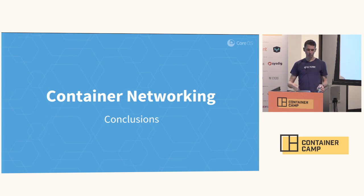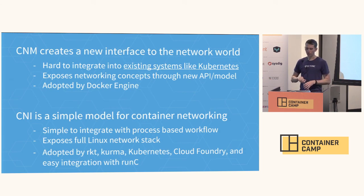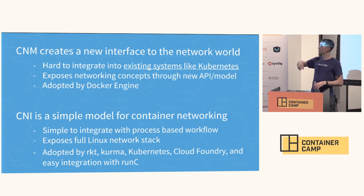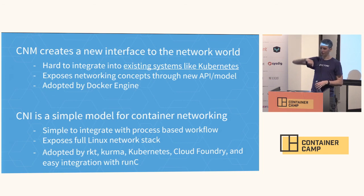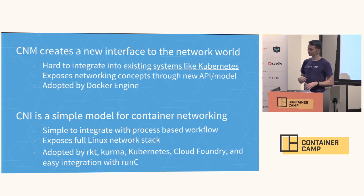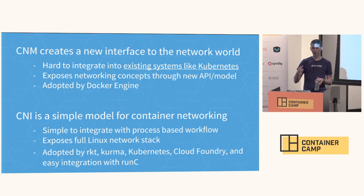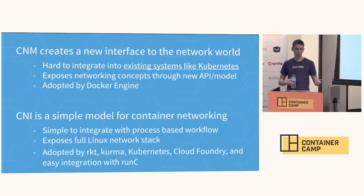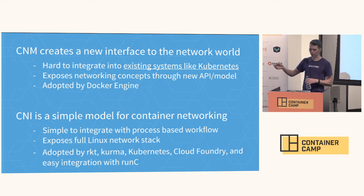Some conclusions: CNM creates a new interface for the networking world and it's kind of hard to integrate into existing solutions — there's a blog post by Tim talking about struggles with integrating LibNetwork and CNM into Kubernetes. It exposes networking concepts not through the existing Linux interfaces, but through new APIs and a new model as adopted by the Docker engine. CNI, on the other hand, is a simple model for container networking in that it directly exposes the Linux networking stack to plugins. It works with simply Unix-y processes, and it's been adopted inside of projects such as Rocket, Kurma, Kubernetes, Cloud Foundry, and is usable with RunC.